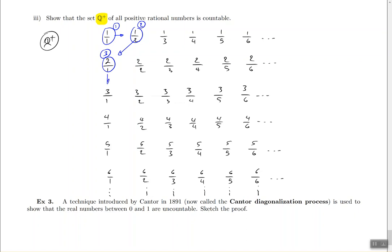From there I go down and count 3 over 1 as number 4. Then I go back up — however, 2 over 2 is the same number as 1 over 1, so I ignore it. I go straight to 1 over 3. It's different from everything counted so far, so I count it as number 5.